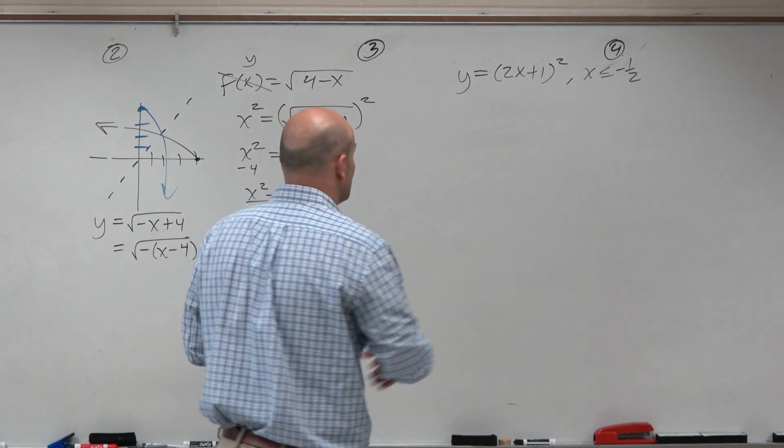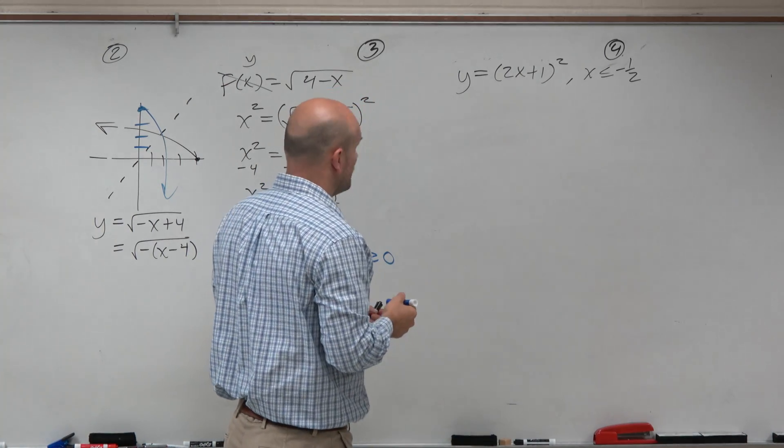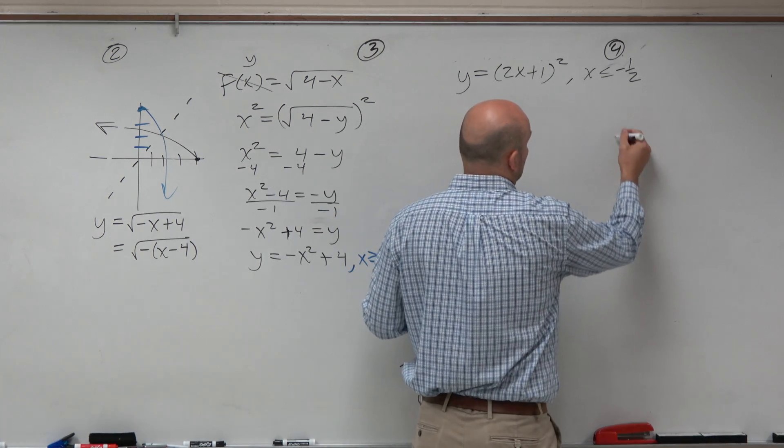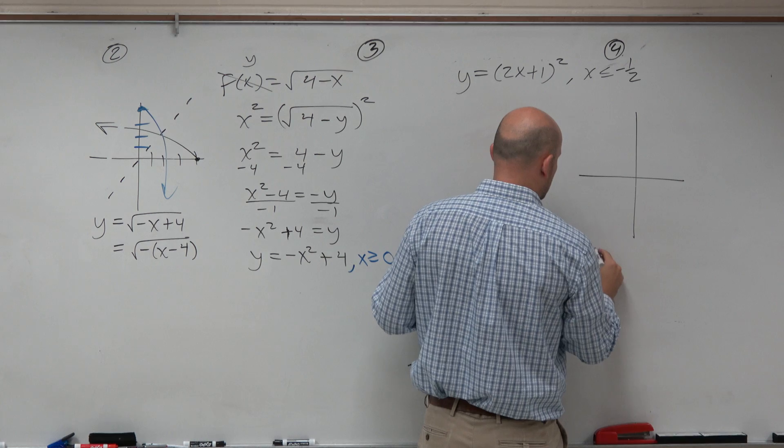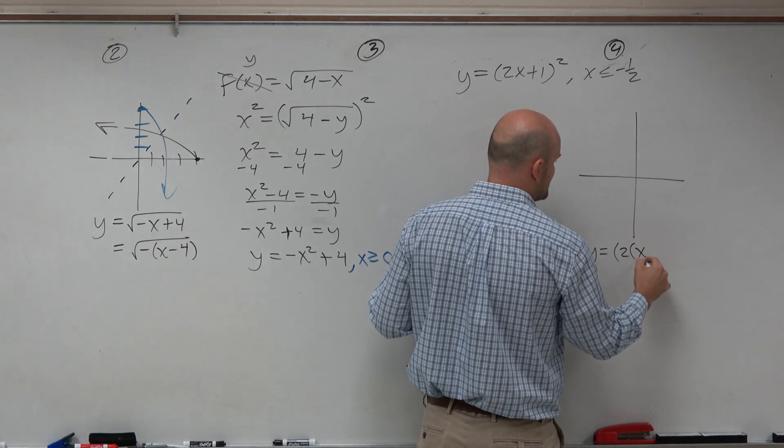And thankfully, this is a quadratic. I can figure out what that quadratic is going to look like in terms of the graph. So let's go ahead and say, well, this would be y equals, if I factor out the 2, because we had to factor out the 2, just like we had to factor out the negative.